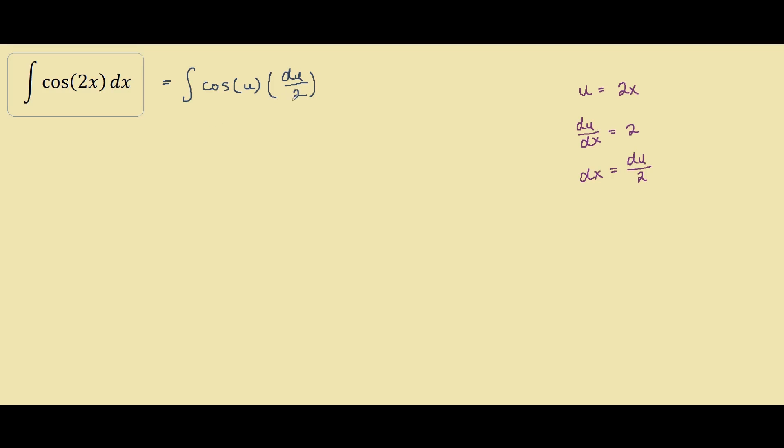We can take out the common factor of one-half outside our integral to make it a bit simpler. So we have one-half integral of cos(u) du.